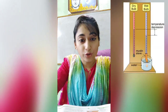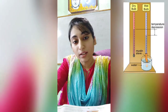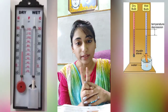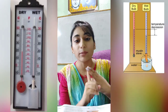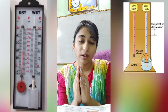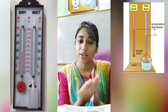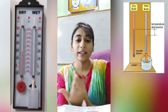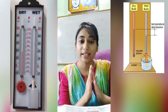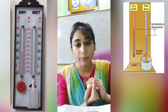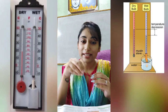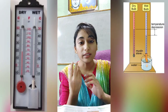Humidity is measured by an instrument known as the wet and dry bulb thermometer. This apparatus consists of two thermometers — the dry bulb thermometer and the wet bulb thermometer — kept side by side. The dry bulb thermometer acts like a normal Celsius thermometer giving you the daily temperature reading. The wet bulb thermometer next to it has its bulb wrapped in a muslin cloth, and the other end of that muslin cloth is dipped in a beaker containing distilled water.